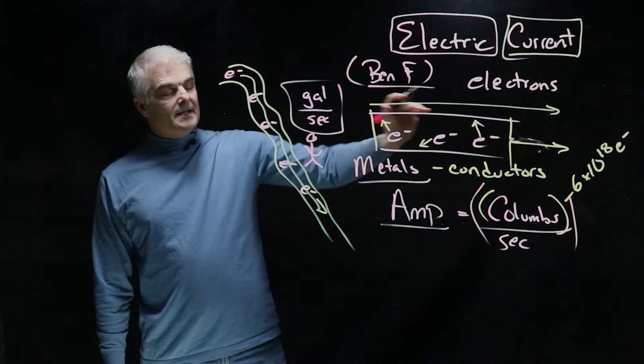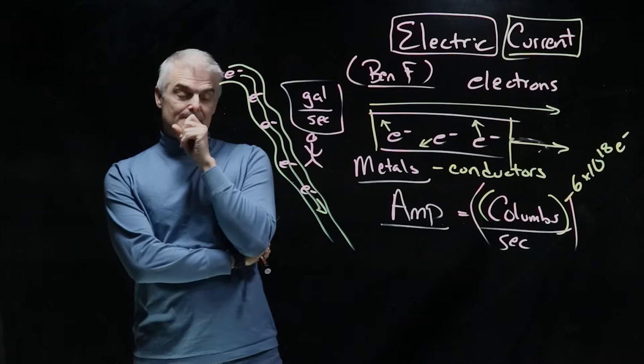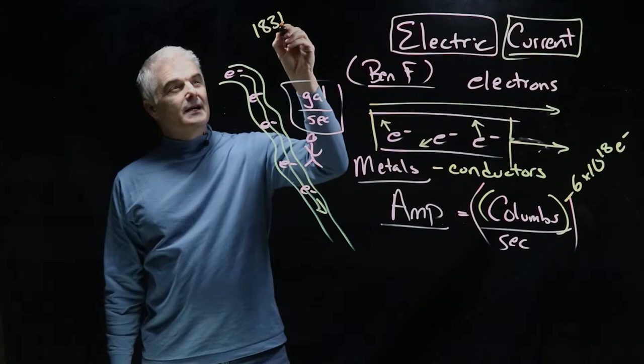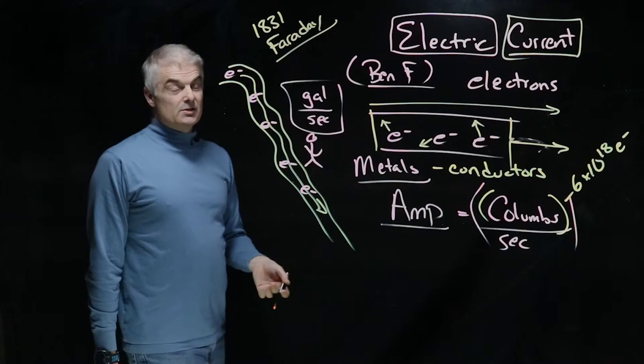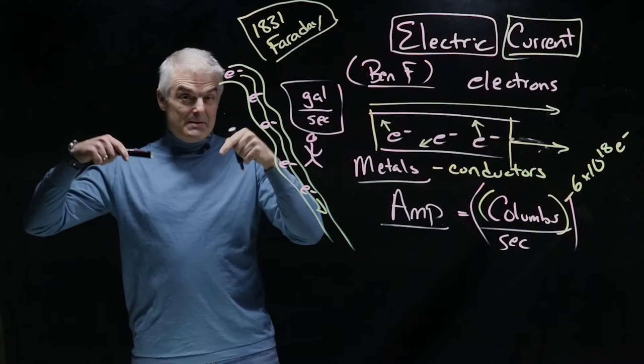The big question though is: how do we get the electrons to move in one direction? That is a difficult question. And in 1831, one of my total heroes in the world, a guy by the name of Michael Faraday, did maybe the most important experiment in the history of the modern era when he figured out how to move electrons through a wire in a direction. But guess what? We're going to repeat his experiment in class.